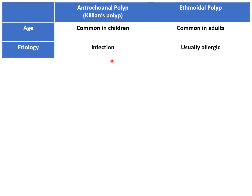Regarding etiology, antrochoanal polyps are infective in origin, and sometimes inflammatory as well. Ethmoidal polyps are usually allergic in origin and are also part of conditions like asthma, aspirin insensitivity, Young syndrome, Kartagener syndrome, and immotile cilia syndrome. In all these diseases there is some problem with ciliary movement, which may be an etiological factor for ethmoidal polyps.